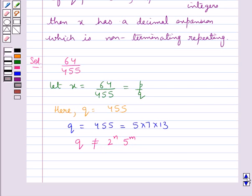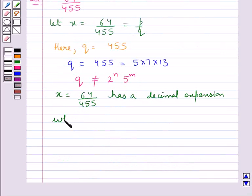From the key idea we can say that x equal to 64 upon 455 has a decimal expansion which is non-terminating, repeating.